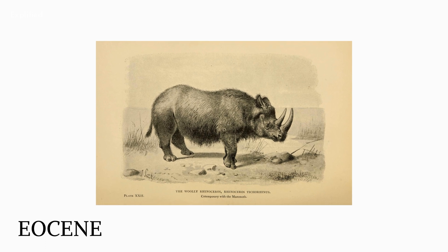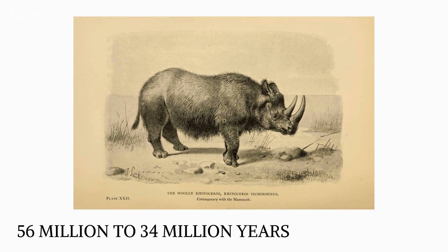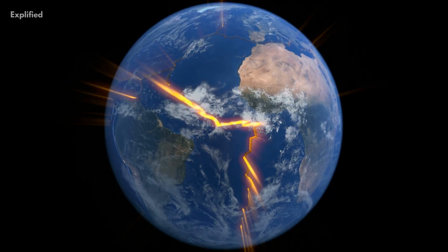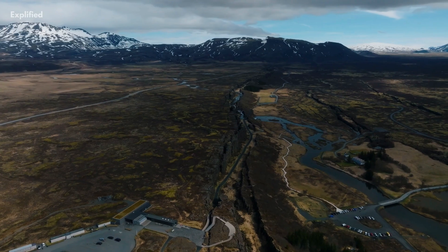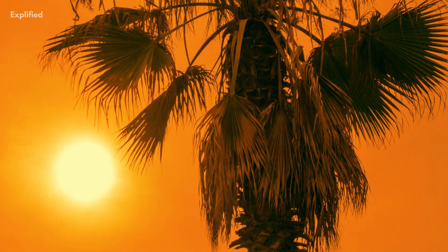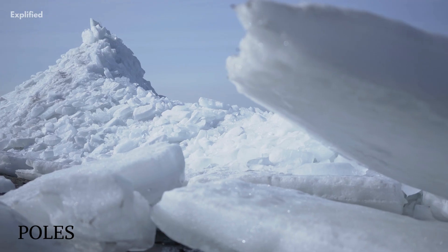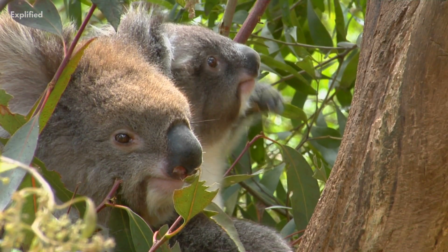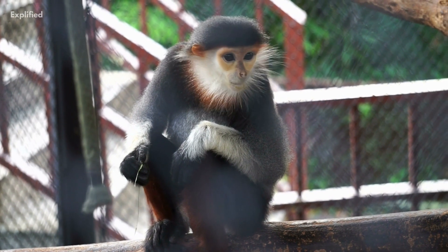Next came the Eocene, the period which lasted from 56 million to 34 million years. The whole western hemisphere was shaped by the collision of tectonic plates, which resulted in the formation of massive mountain ranges. Around this time, the weather was hot and humid. The equator, meridian, and poles were all identified by temperature differences. Primitive species such as marsupials and lemurs made an appearance in the fauna.